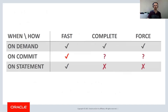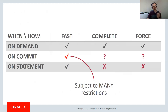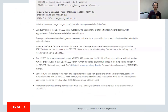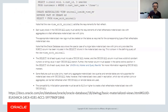Fast refresh on commit is the goal, but there are a whole stack of restrictions. Looking at the 18c docs, there are two to three pages worth of general restrictions on fast refresh. We've reduced some of them over time, but there are still many limitations. So it's important to be aware of those — how do you know you've hit them, and what can you do about it?